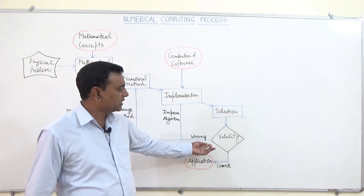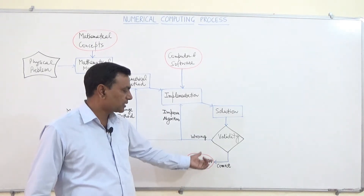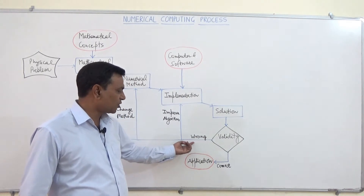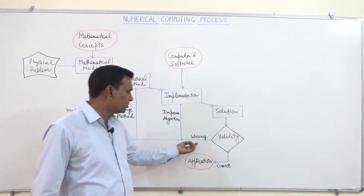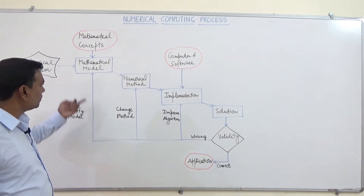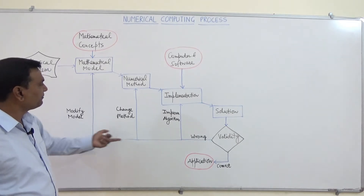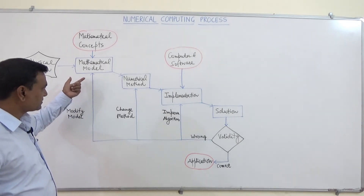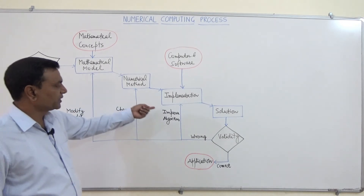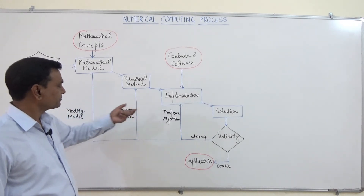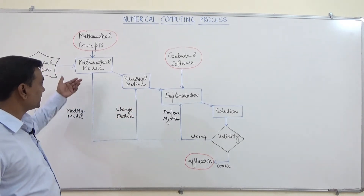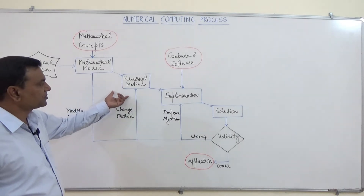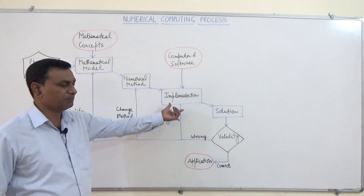If we are not getting the correct results, it means this is wrong. Then we need to go and review these phases — phase 1, 2, and 3. Sometimes we need to make changes in the mathematical model, the numerical method, or the implementation.